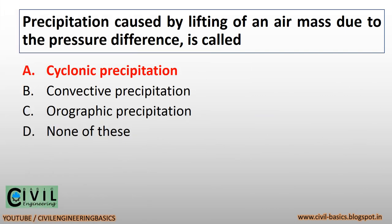Precipitation caused by lifting of an air mass due to the pressure difference is called cyclonic precipitation.